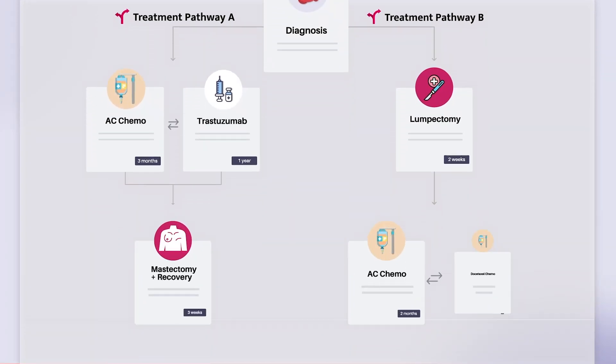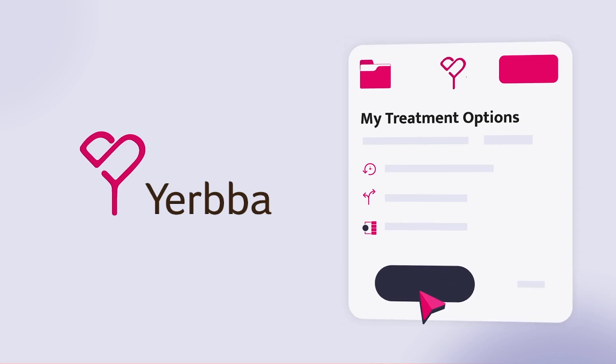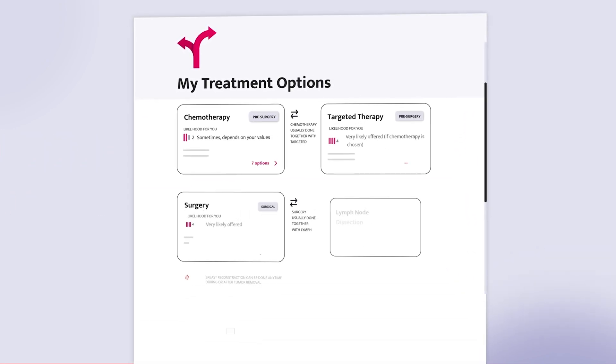If you want to learn more about the stage of your tumor, what it means, and the treatment options available to you, I'd love to invite you to go to Yerba.com. You will get there your personalized Yerba report, which will tell you all the features that are known about your tumor so far and all the treatment options, including the pros and cons of those treatments. Your report is created by cross-referencing your medical records, which you give us permission to access, with the latest medical evidence.